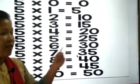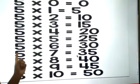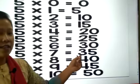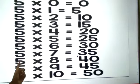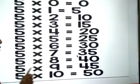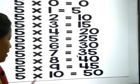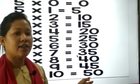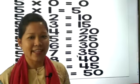5 6s are 30, 5 7s are 35, 5 8s are 45, 5 8s are 40, and 5 9s are 45, and 5 10s are 50. Okay, thank you.